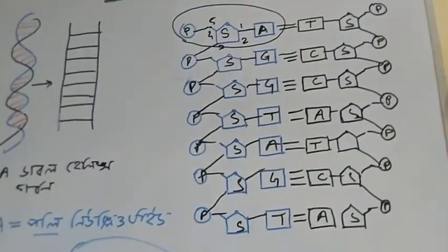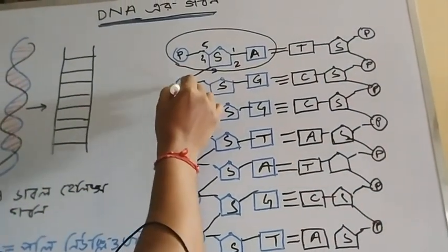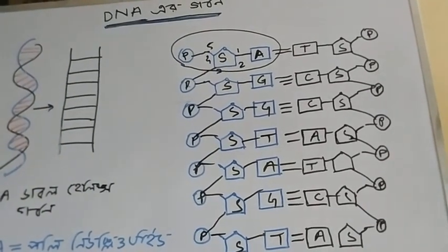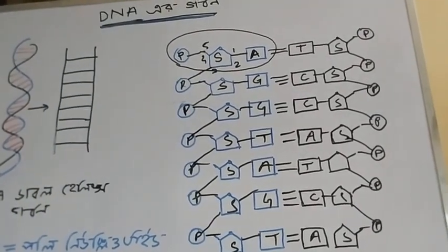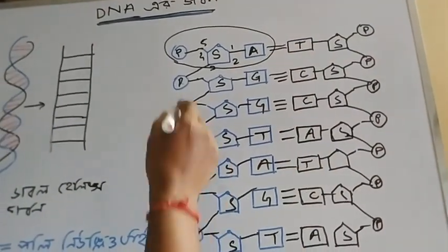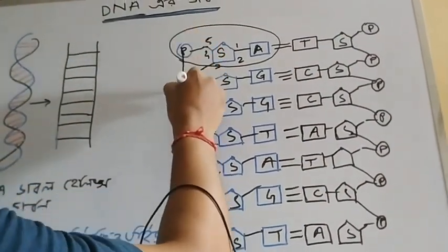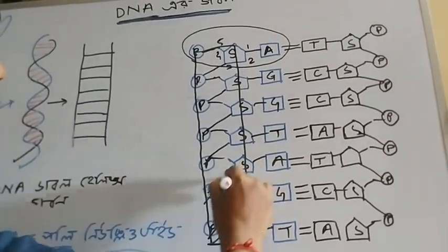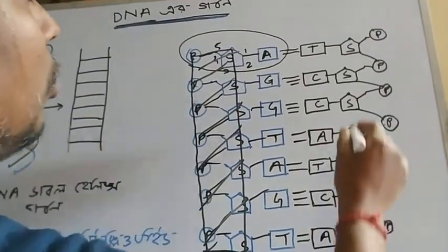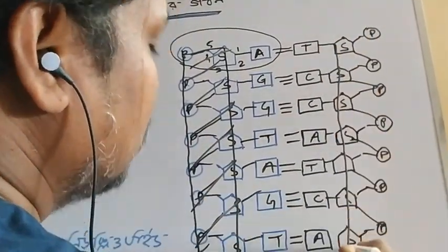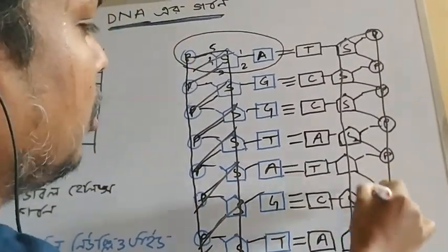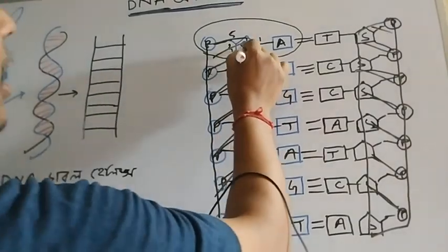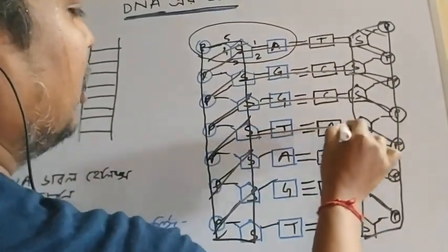This is the bond of phosphodiester bond, and hydrogen bond. Now we can see that in the shape of the line, there is a strand — meaning that it is the same. We can see that the sugar and phosphate are the same, and we can also see that the answer is the same.